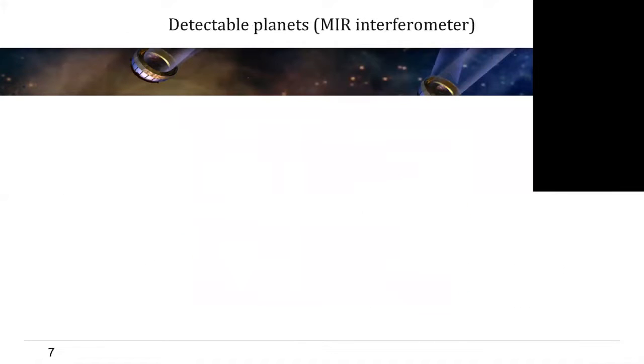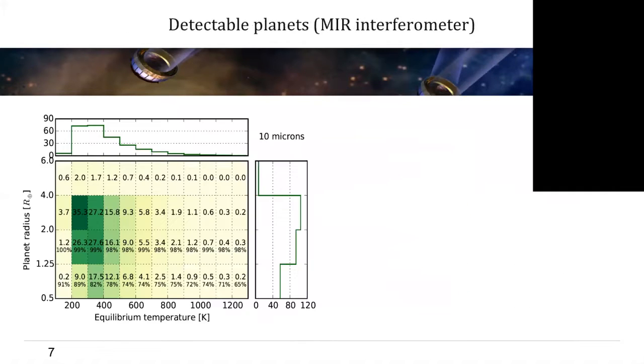So now it's time for the interesting bit, the results. So this first plot shows us the number of detectable exoplanets for the mid-infrared interferometer, binned by planet radii in units of Earth radii, and equilibrium temperatures in units of Kelvin. And the small numbers in percent here state the fraction of planets which could be detected via radial velocity using the ESPRESSO spectrograph. And if we integrate up the whole depicted parameter space here, we end up with 261 planets which could be directly detected at 10 micrometers.